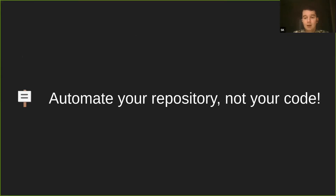Another important idea I want to state separately: GitHub Actions are not just about automating your code — build, test, deploy, package. It's about automating your whole repository. You can automate every aspect of a repository: issues, documentation, projects, environments and deployments, releases — everything that is supported by GitHub is automatable using GitHub Actions.